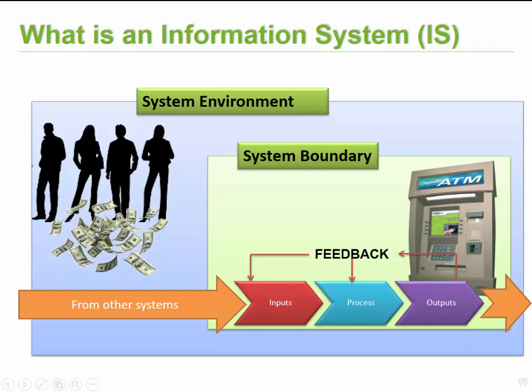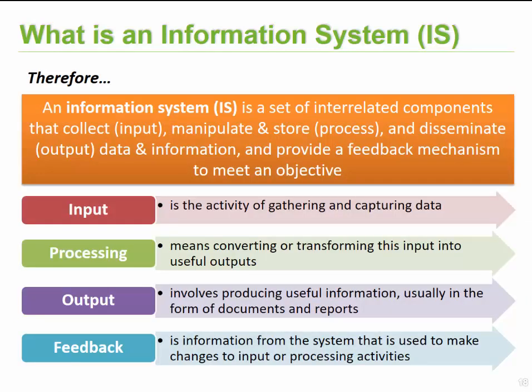To conclude the information systems section: an information system is a set of interrelated components that collect, manipulate, store, and disseminate data and information, and provides a feedback mechanism to meet an objective. Input is the activity of gathering and capturing data. Process is transforming that data into meaningful outputs. Output is useful information or objects received from the system — often documents, reports, or physical products. Feedback is information the system uses to indicate where changes to inputs are needed in order to reach proper outputs.